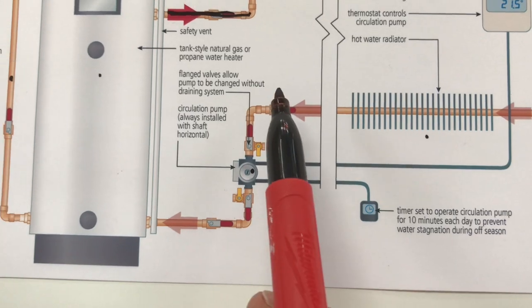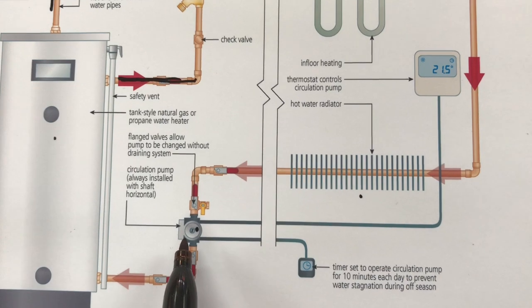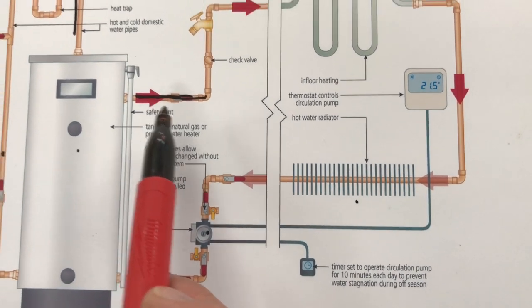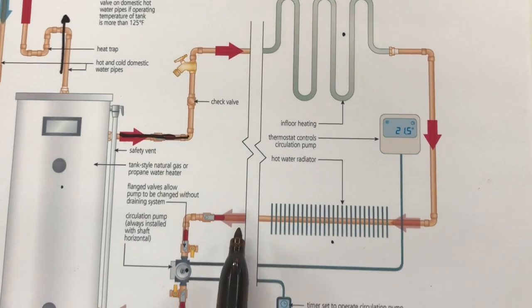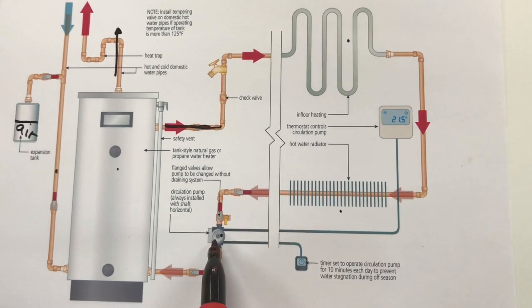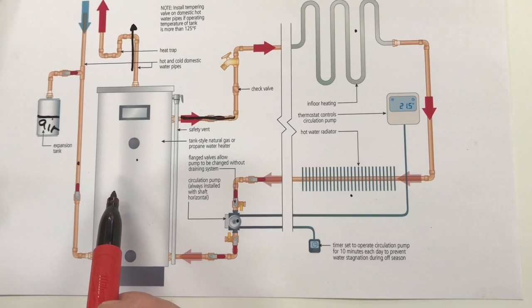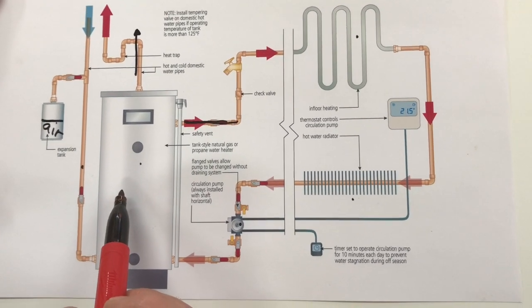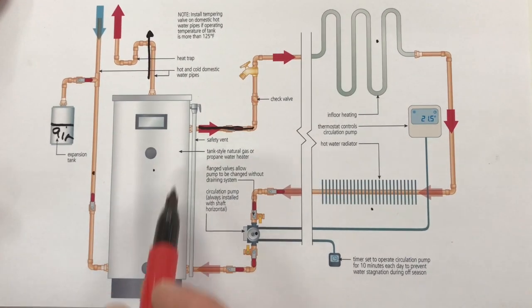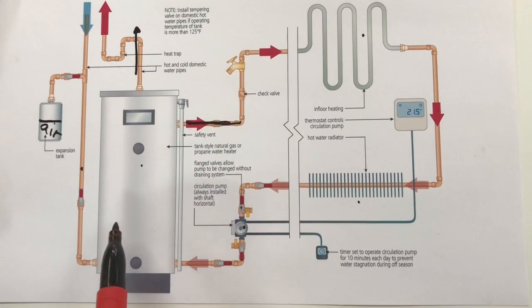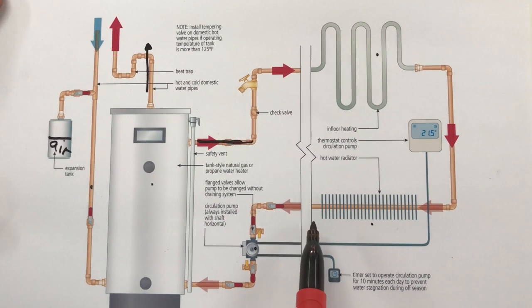So the thermostat calls for heat, turns on the circulator pump, circulates hot water through the system until the room is warm and then the thermostat shuts off the pump. Cooler water is returning to the tank and the tank has its own aquastat inside so it will fire up and keep the water in this tank hot as needed in a kind of separate loop.